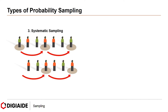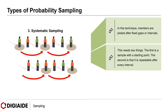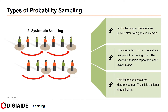Next, systematic sampling. In this technique, members are picked after fixed gaps or intervals. This means the sample has a starting point, and it is repeatable after every interval. This technique uses a predetermined gap, so it is the least time-consuming. For instance, a geological institute might wish to study soil samples along a stretch of river bank approximately 5 km long. They might choose to collect a sample every 50 meters, ending up with 100 soil samples over the entire stretch.